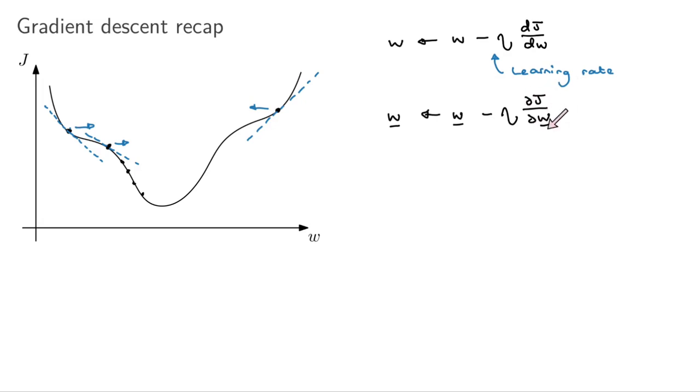So as a reminder, this would be if we stack all our parameters as a vector, then this would be a vector of all those partial derivatives and we can update it all in one go. Like this. And that's the basics of gradient descent.